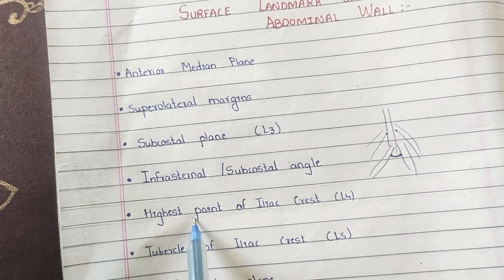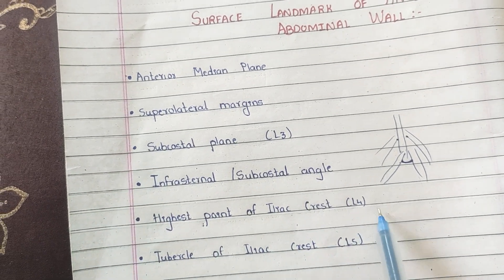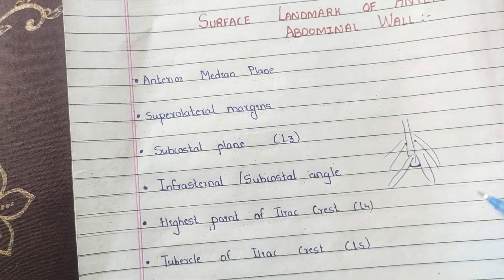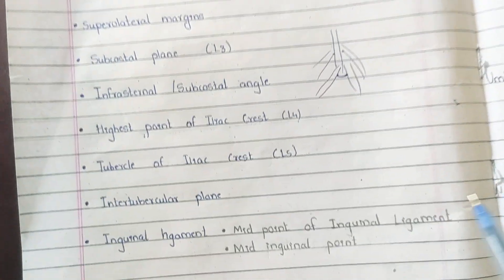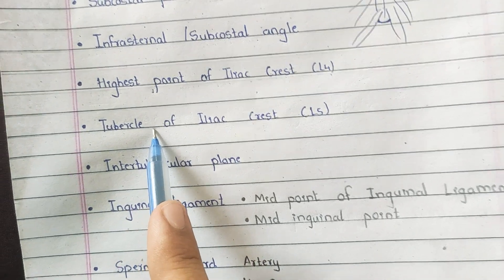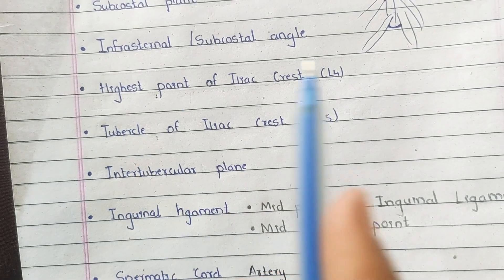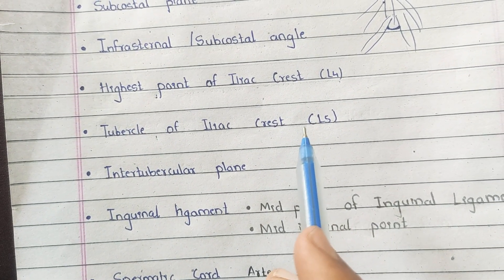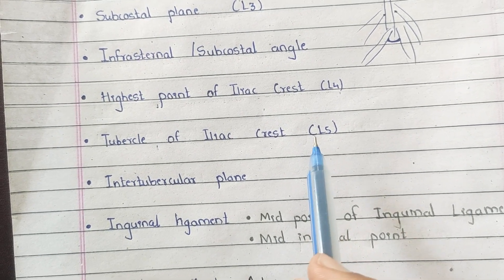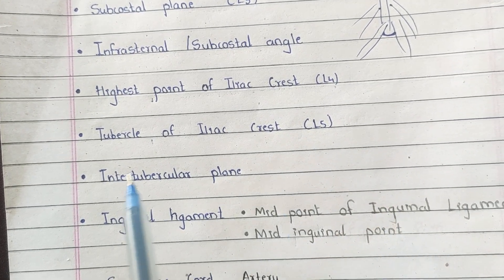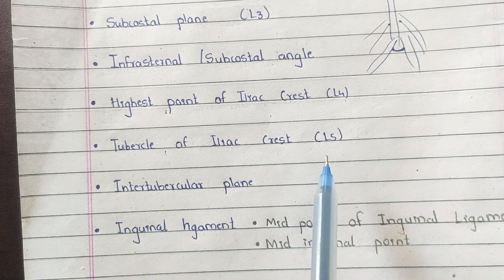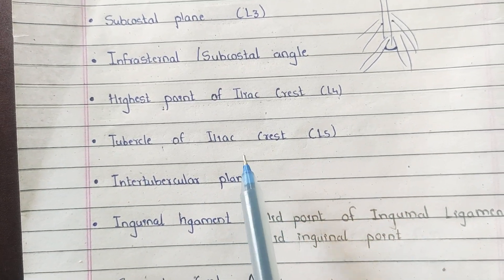The tubercle of the iliac crest lies five centimeters behind the anterior superior iliac spine and lies over the fifth lumbar vertebra. A transverse plane passing through the tubercle forms the inter-tubercular plane.